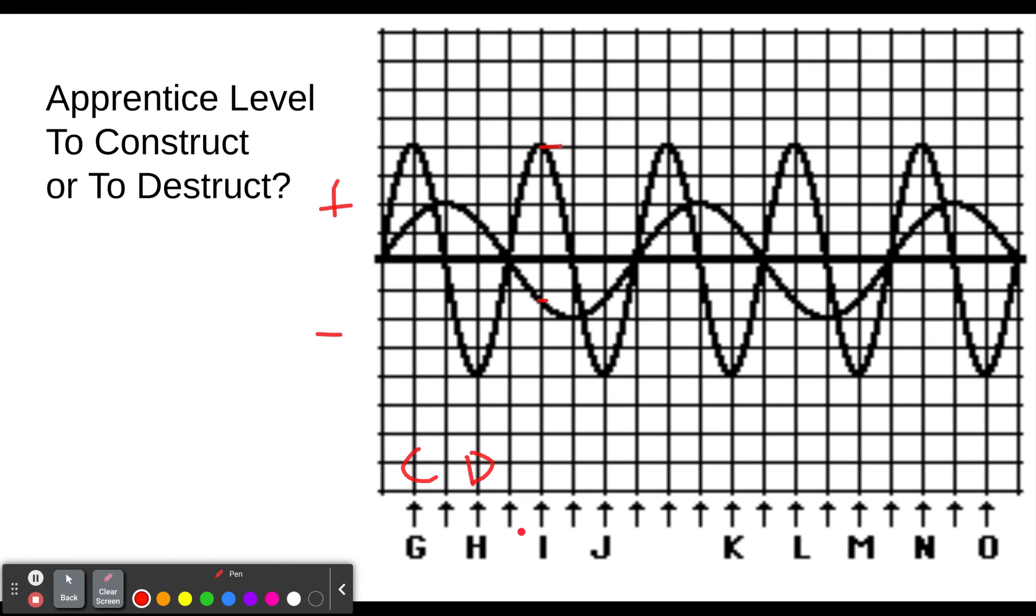At J, we have a negative and a negative. Well, both negatives are pushing the same direction on the medium, so those are going to add up to give you a bigger amplitude. At K, we see them pushing opposite directions, positive and negative, so that's destructive.